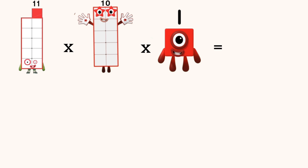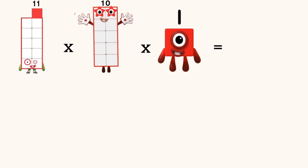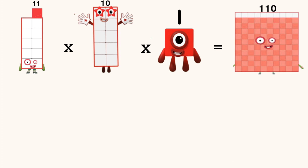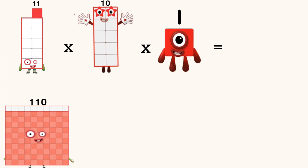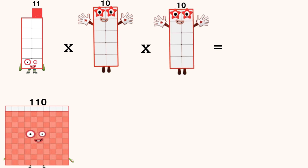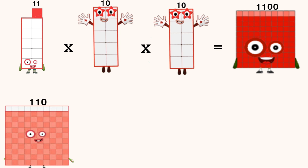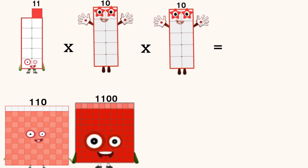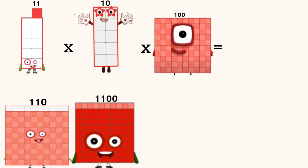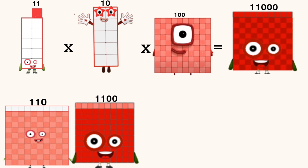Eleven times ten times one equals one hundred ten. Eleven times ten times one hundred equals eleven thousand.